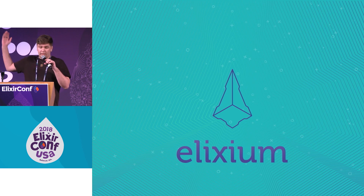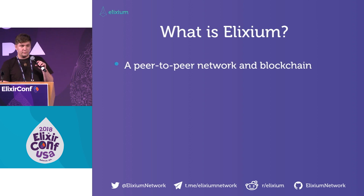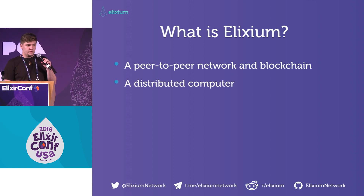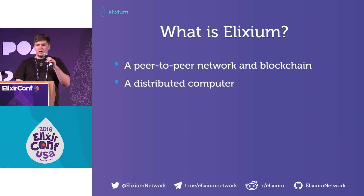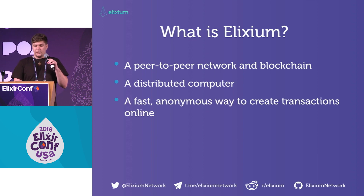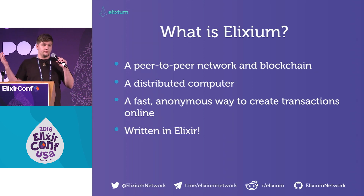So I came up with the idea for Elixirum. What is Elixirum? It's a peer-to-peer network and blockchain — pretty much like every other blockchain in the world, it's peer-to-peer. It is a distributed computer, which means you can write contracts on it, decentralized applications on it, but without some of the limitations that other blockchains have in terms of contracting. It's also a fast, anonymous way to create transactions online. And it's written in Elixir, so you know it's good.